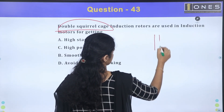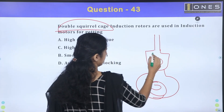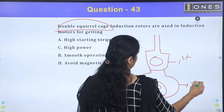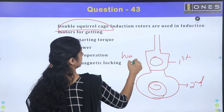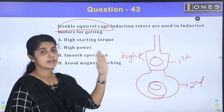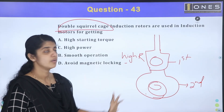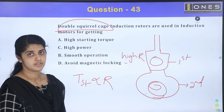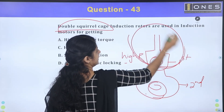In the double squirrel cage motor, the outer cage has high resistance and the inner cage has low resistance. The outer cage provides high starting torque while the inner cage carries the main load current during running conditions.